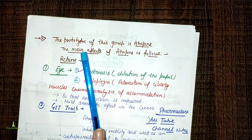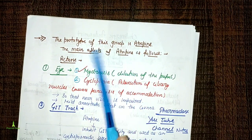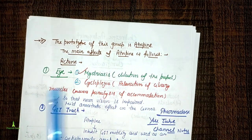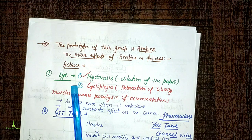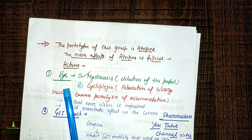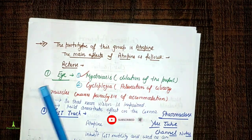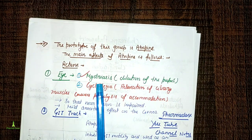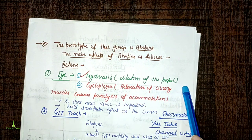The main effect of atropine: since atropine is an antagonist, it will produce the opposite effect of cholinergic agonists. So atropine will produce mydriasis — dilation of the pupil. Cholinergic agonists caused miosis (constriction), whereas atropine causes mydriasis (dilation).